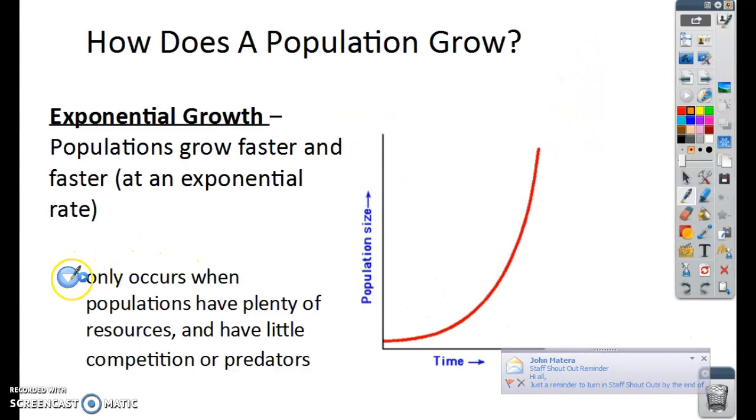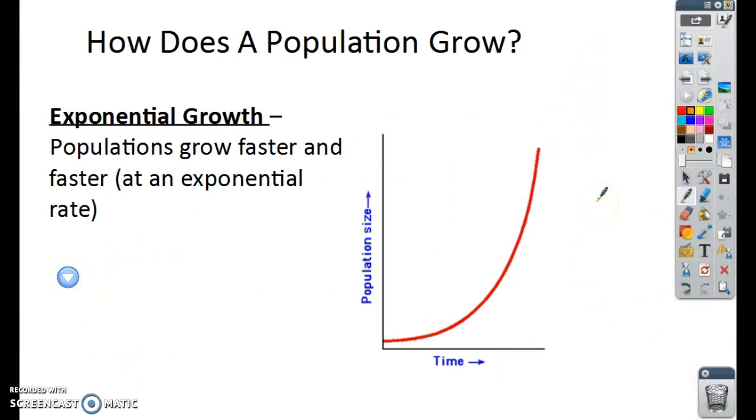So the first thing we're going to talk about is exponential growth. How does the population grow? There's a couple different ways we're going to talk about. These are typical graphs showing a population growing. So the first one here is exponential growth. Remember an exponent is a number that's up in the little corner. So if we have a graph of exponential growth, it looks like this with a big curved line going up. What this is showing us is they grow faster and faster at an exponential rate.